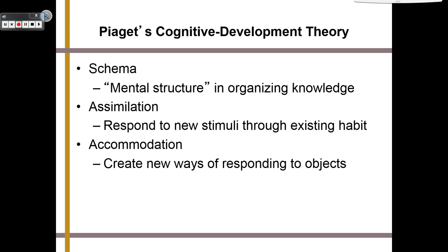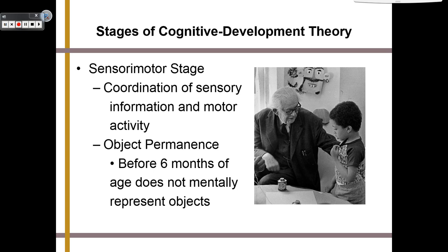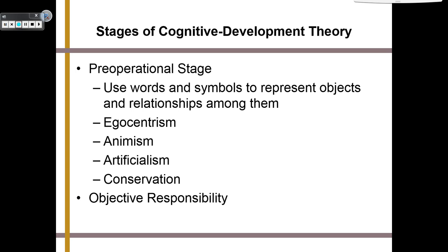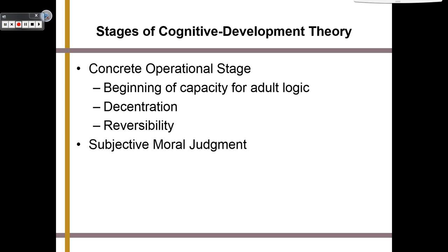The first stage is the sensory motor stage — it is the coordination of sensory information and motor activity, and the primary lesson learned in this stage is object permanence. Before six months of age, we do not mentally represent objects. Next, there is the pre-operational stage, where we learn to use words and symbols to represent objects and relationships. We learn lessons on egocentrism, animism, artificialism, conservation, and objective responsibility. There's also the concrete operational stage, which is the beginning of the capacity for adult logic, where you learn about decentration, reversibility, and develop subjective moral judgment.